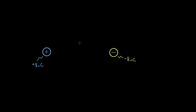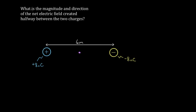Solving electric field problems gets significantly harder when there are multiple charges. Theoretically it shouldn't, but people have a lot more problems with multiple charges involved. So let's say the question is: what's the magnitude and direction of the net electric field — the total electric field — created halfway between two charges down here?